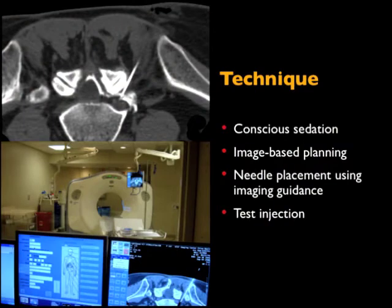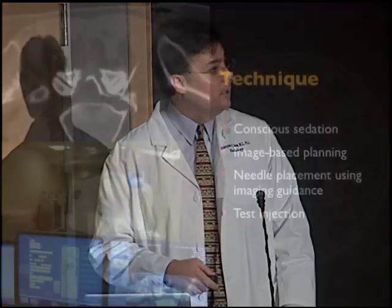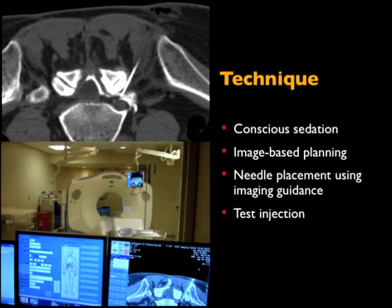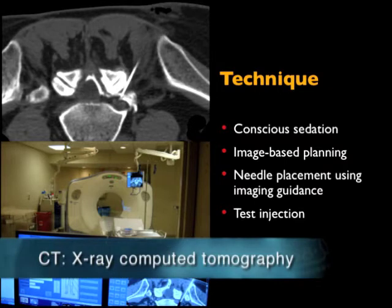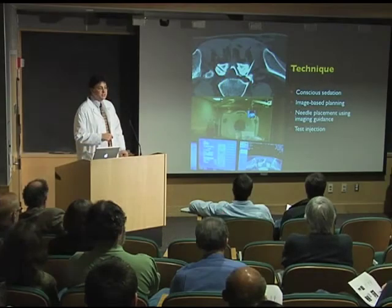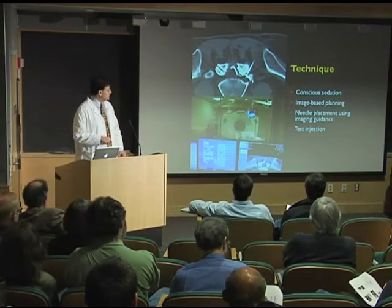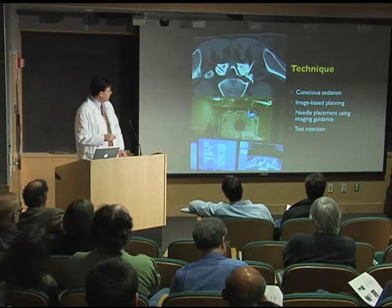As far as technique, we do use conscious sedation — that's equivalent to Valium and fentanyl or Valium and morphine — to make you calm during the procedure, but not to knock you out. We acquire a scout scan to show us what we're looking at, place the needle using imaging guidance — we prefer CT. Once we think we're exactly where the needle should be, we do a test injection with x-ray dye, and that shows up as bright stuff on the CT scan.